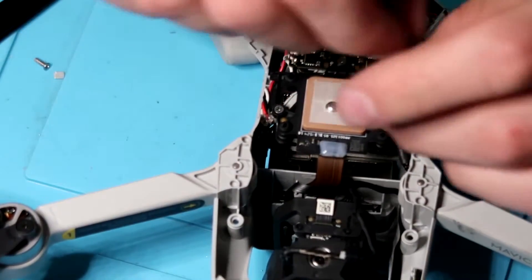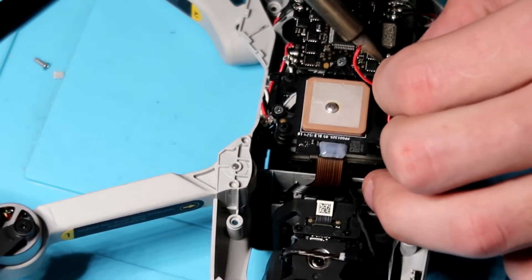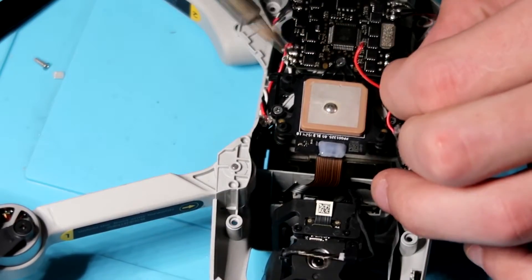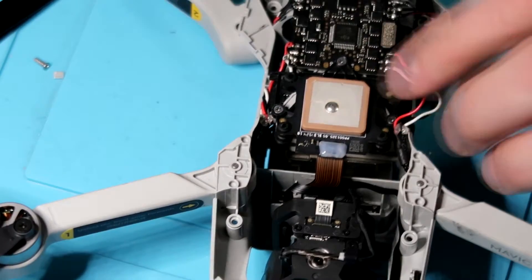So let's solder these motor wires back to the 4-in-1, and we are almost done. And we're on the last step. We just got to put the top shell and the bottom shell on from here, and we'll be good to go, guys.